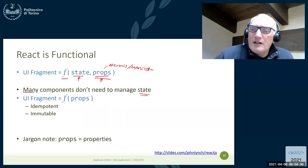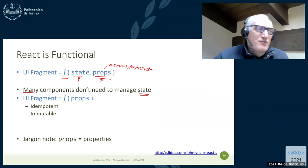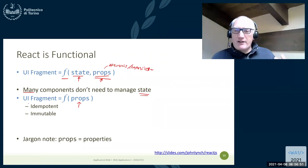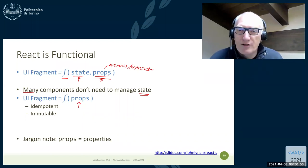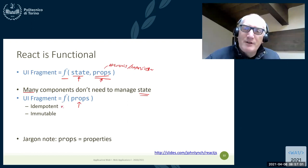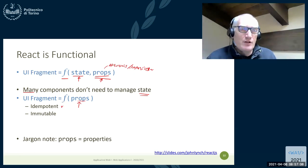If we forget state management for a moment, a given component is just the implementation of a function that, given a set of properties, will return a set of user interface fragments — a portion of the virtual DOM. This function should be idempotent: if we call the function twice or three or four times with the same properties, we will get exactly the same result.